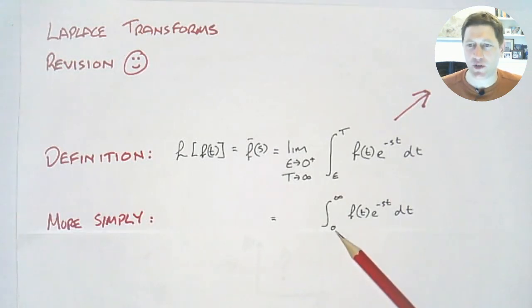Now, you've probably seen that in its more simple form, where we just put our limits in as 0 to infinity. That's okay a lot of the time, but there are a few instances where we have to be careful at these limits to make sure we define the function correctly, for example if there are discontinuities.